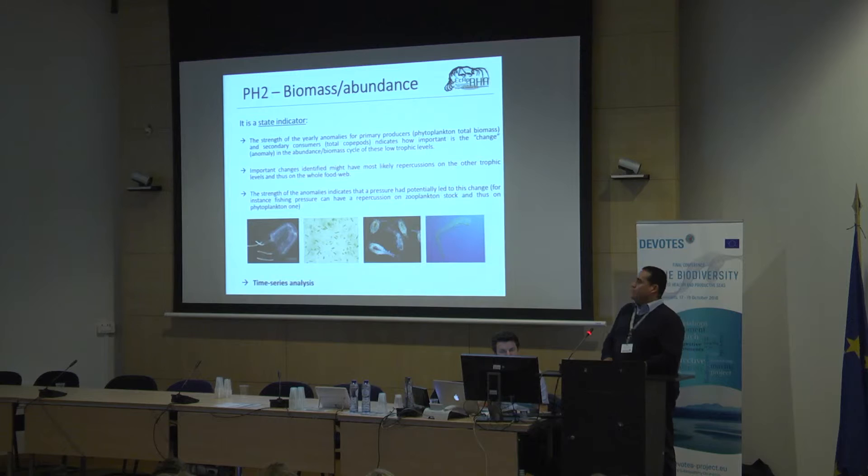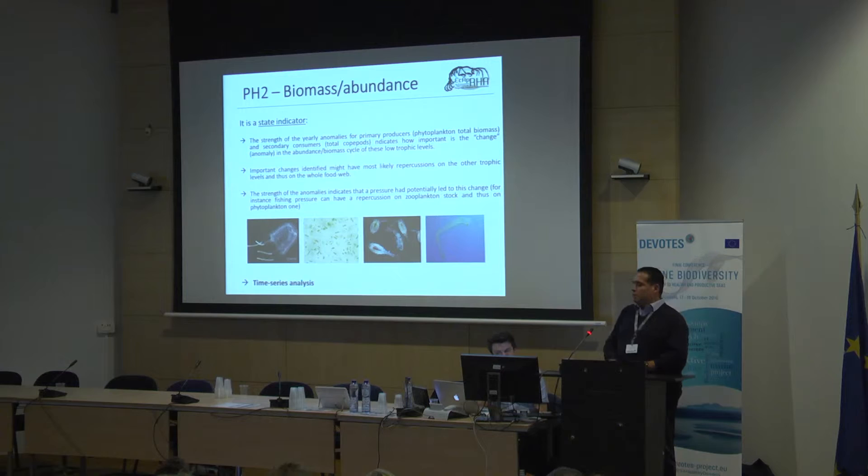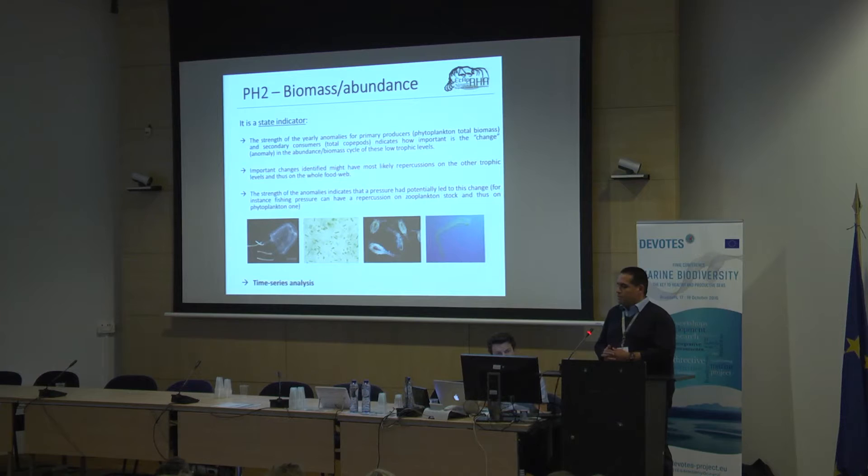The second indicator is biomass and abundance — the state indicator — so the strength of yearly anomalies for primary producers and secondary consumers. Important changes might have most likely repercussions on the other trophic levels, and the strength of anomalies can indicate a pressure that has potentially led to this change.